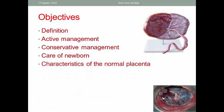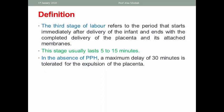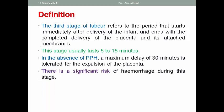The third stage of labor refers to the period that starts immediately after delivery of the infant and ends with the complete delivery of the placenta and its attached membranes. The duration usually lasts between 5 to 15 minutes. In the absence of postpartum hemorrhage, a maximum delay of 30 minutes is tolerated for expulsion of the placenta. After 30 minutes, this is considered a case of retained placenta and should be re-evaluated for the cause.